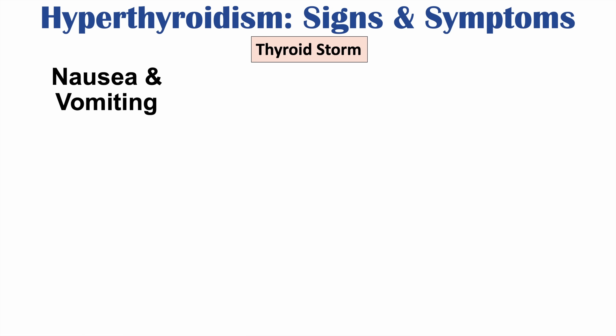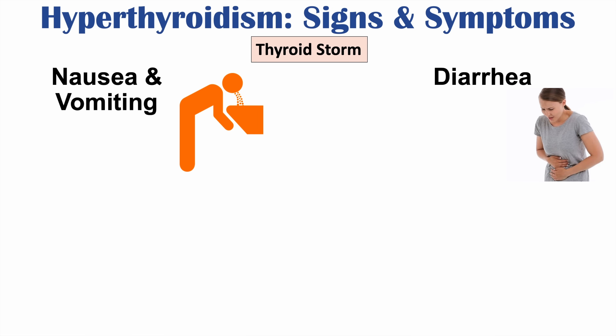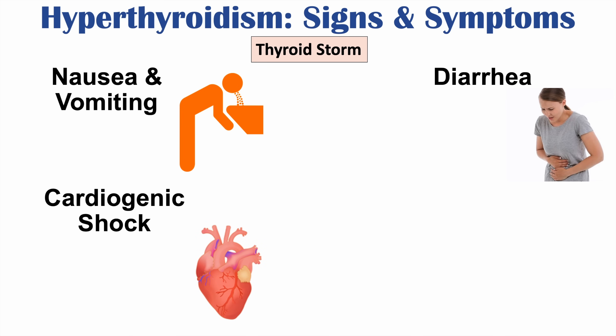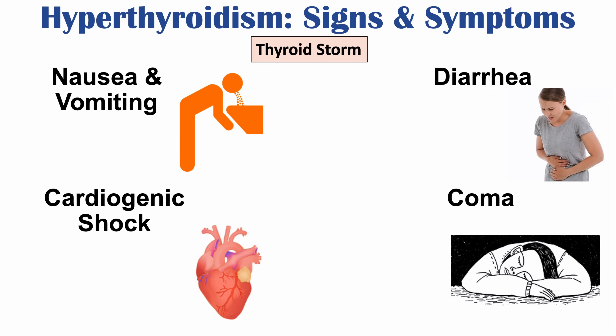Other signs and symptoms of thyroid storm include nausea, vomiting, and significant diarrhea — even more pronounced than in regular hyperthyroidism. The high heart rate can lead to arrhythmias like atrial fibrillation, and if prolonged or very severe, can cause cardiogenic shock due to tachycardia-induced heart failure, impairing the heart's ability to pump blood to organs. Ultimately, if untreated, thyroid storm can lead to coma.